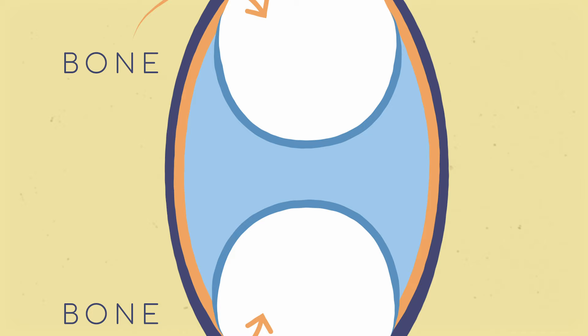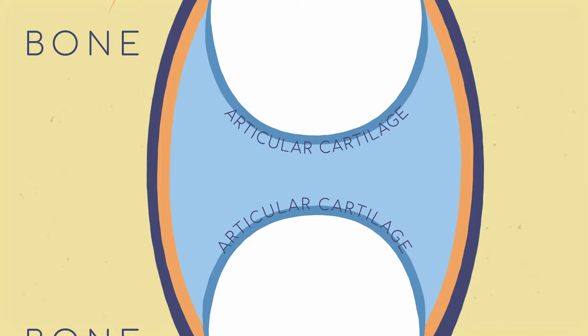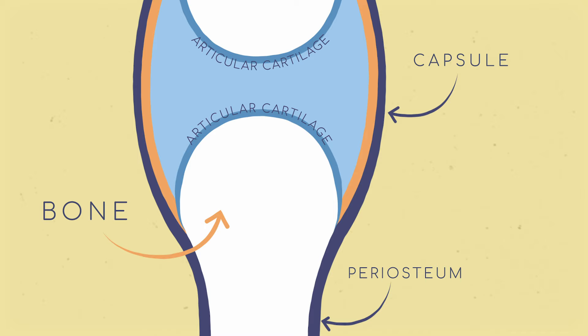Let's break this image down. Synovial joints are made of two bones coated with a super smooth, glassy-looking bit of connective tissue called articular cartilage. That whole thing is surrounded by a fibrous capsule that ties it together with periosteum, the connective tissue that wraps all around the bone.